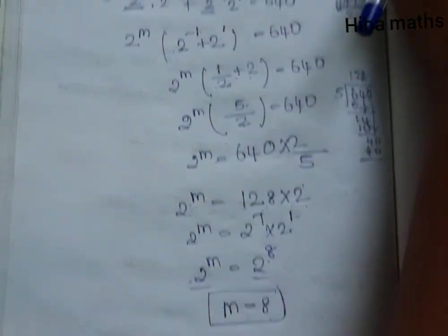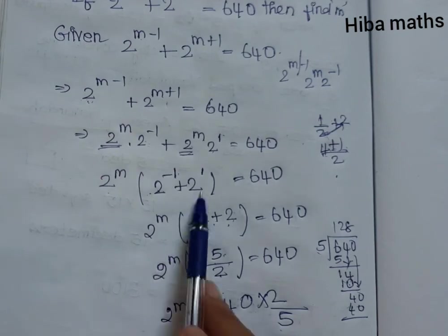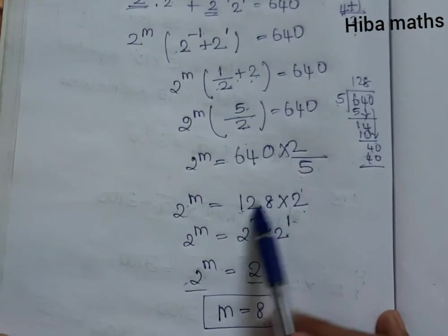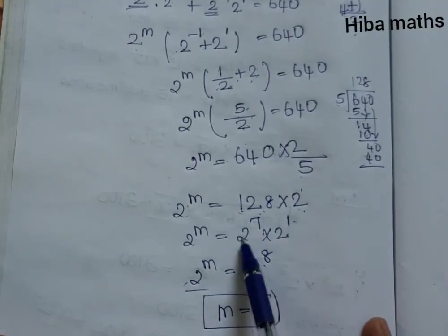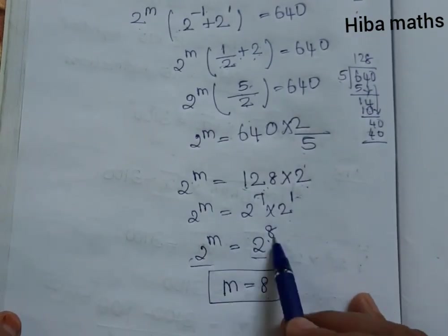It is very easy. You split it by factoring out 2^m, solve using 5/2, then calculate 128 × 2. Since 128 is 2^7 and 2 is 2^1, we get 7 + 1 = 8. So m = 8.